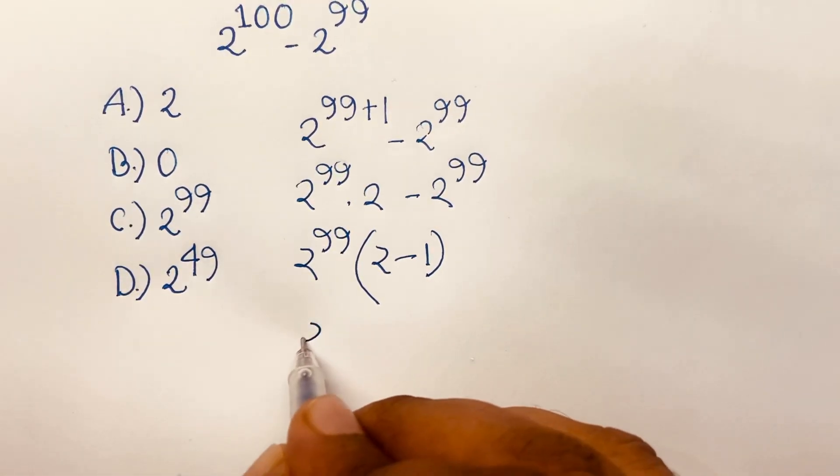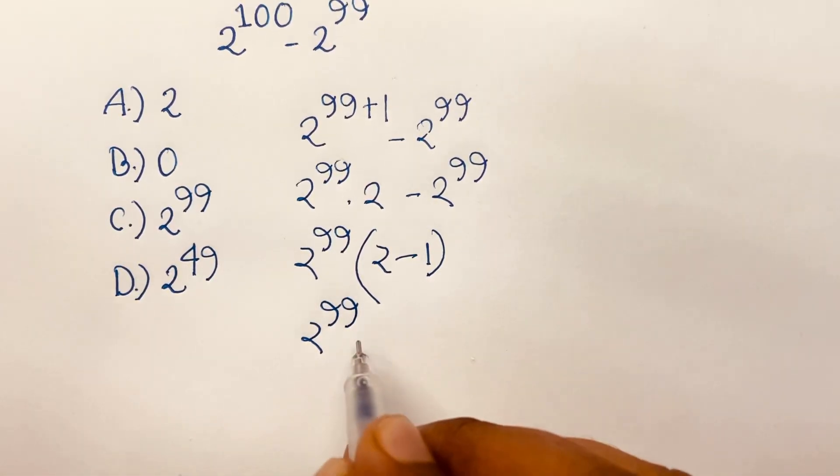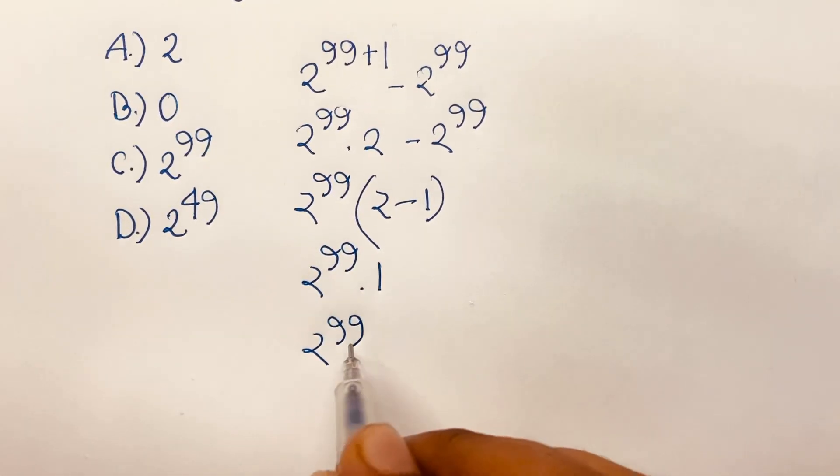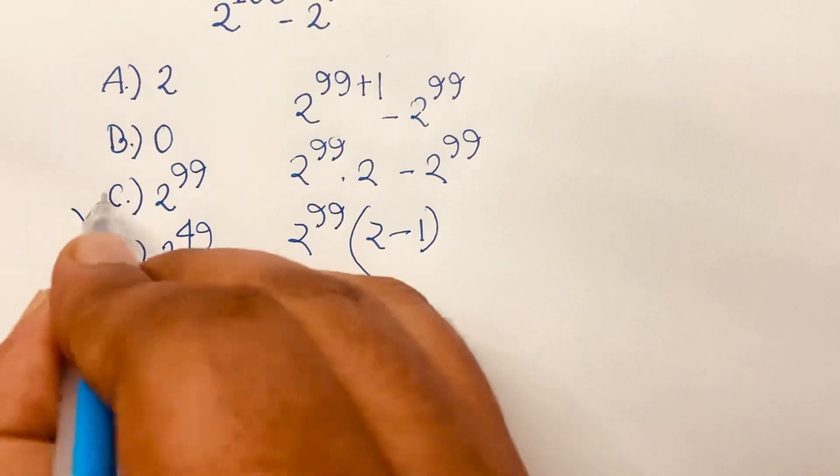Then I can say here is 2 to the power 99 times 1, it will be 2 to the power 99. So option C is our right answer.